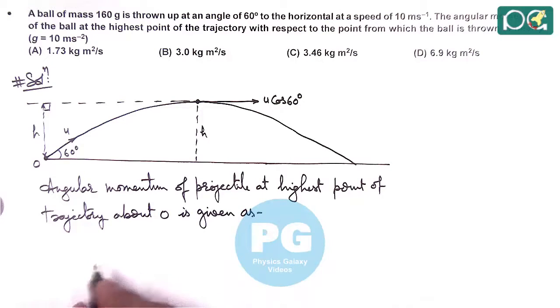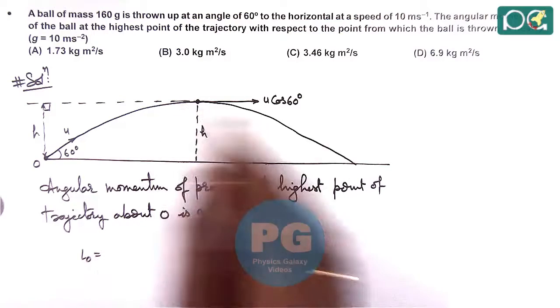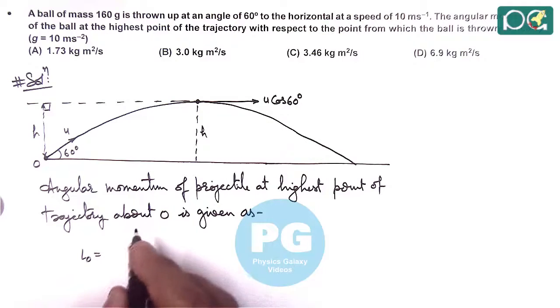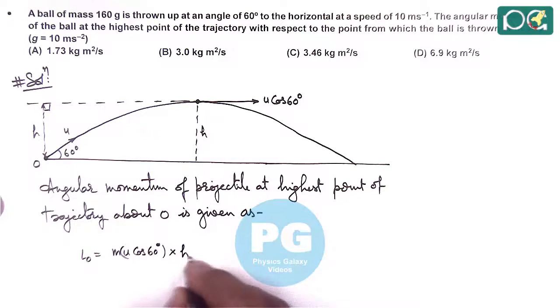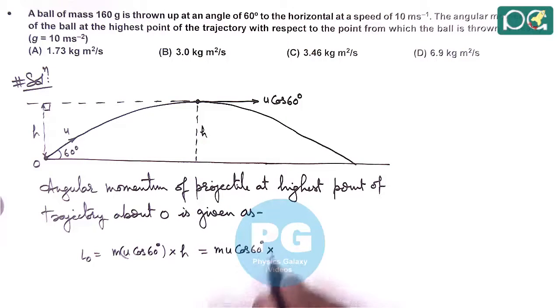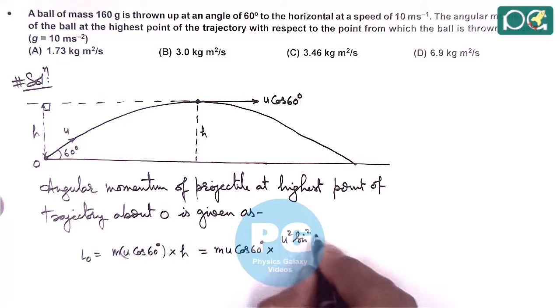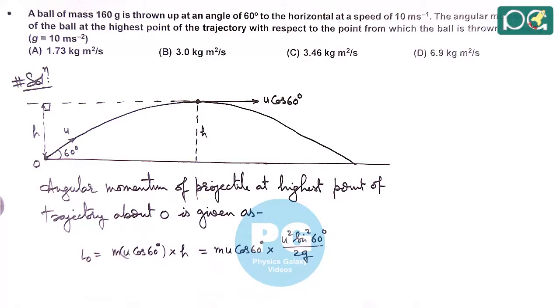Here angular momentum about O we can write the linear momentum is m u cos theta, m u cos 60 degree multiplied by the perpendicular distance that is h. So if we substitute the values, u squared sin squared 60 degree by 2g. This is the formula for maximum height of projectile.